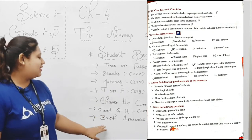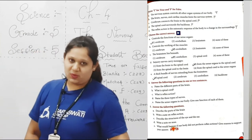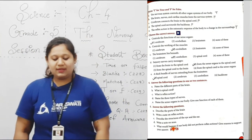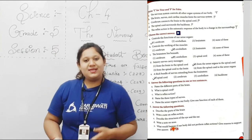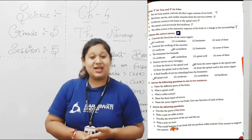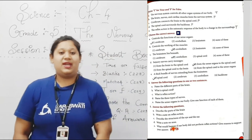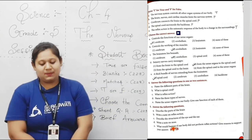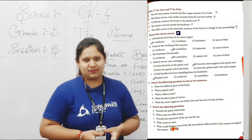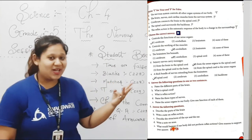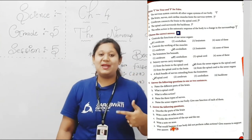Now you have to write down short question answers and brief question answers in your CW questions. Hum textbook mein se dekhenge aur us ke saath answers bhi likhenge. With good handwriting. Number 1: Name the different parts of the brain. The different parts of the brain are — cerebrum, cerebellum and brainstem.